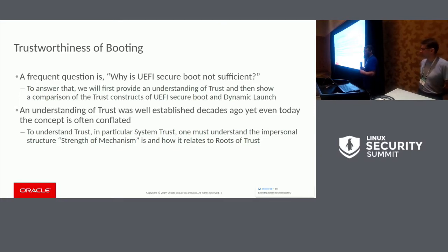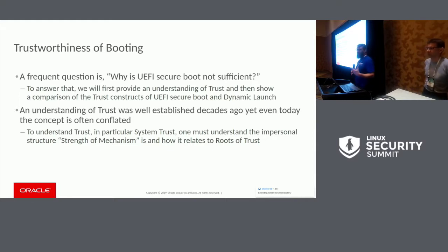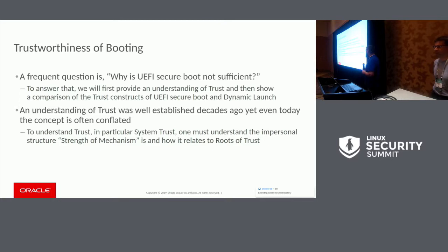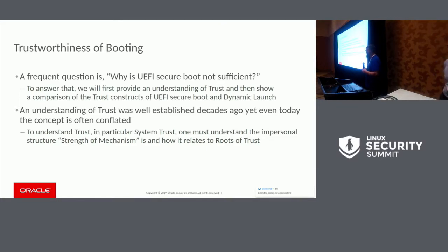Trust is a human social concept. Any time we want something to act on our behalf, we entrust it — we give it trust. This is the same with computer systems. When we want the computer to do something on our behalf, we give it our information and trust it to do the right thing. We need to find something that is the core of that — that's our root of trust. And for the root of trust, we need to understand why we can trust it, which is where we come to something called strength of mechanism.